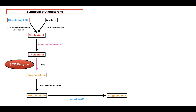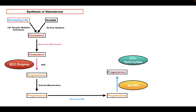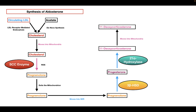The next enzyme that pregnenolone encounters is 3-beta-HSD, which catalyzes the conversion of pregnenolone into progesterone — the first enzyme pregnenolone encounters in the smooth endoplasmic reticulum. After progesterone is formed, it encounters another enzyme called 21-alpha-hydroxylase, which catalyzes the conversion of progesterone into 11-deoxycorticosterone. 11-deoxycorticosterone then moves into the mitochondria, where it undergoes the remaining reactions to form aldosterone.